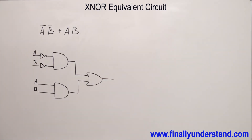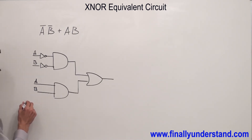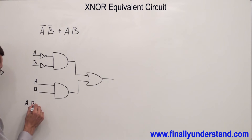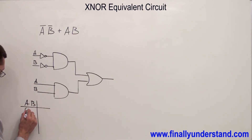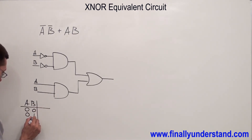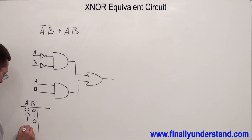Next, I'm going to find the truth table of this circuit. I have A and B. I have 00, 01, 10, 11.